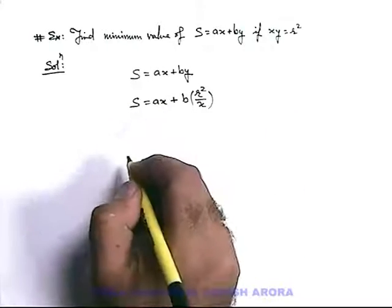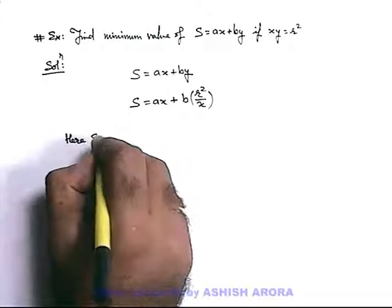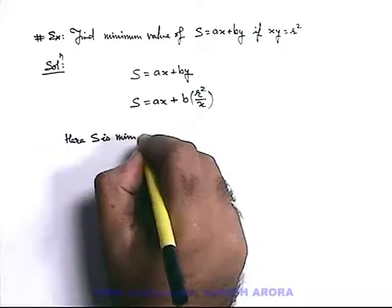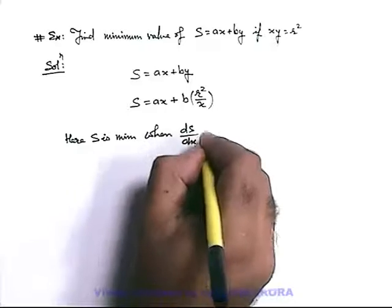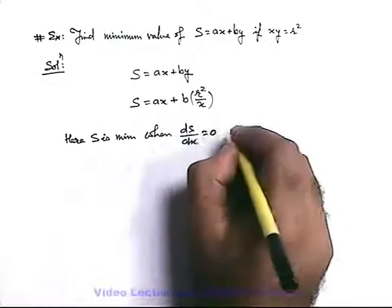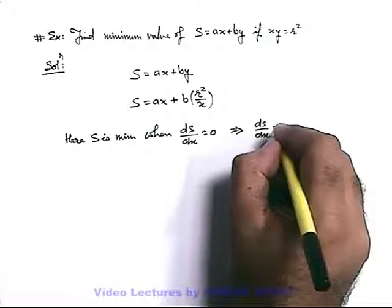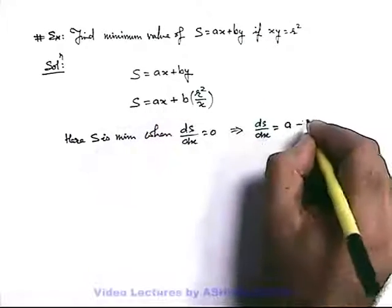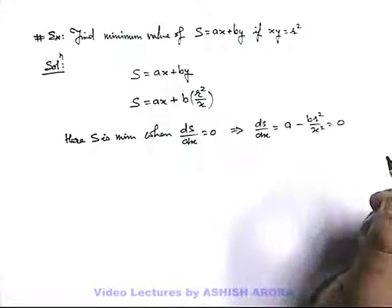Now s is given in terms of x. We can say s is minimum when ds over dx is equal to zero. If we differentiate, ds by dx is equal to a minus br squared by x squared, set equal to zero.